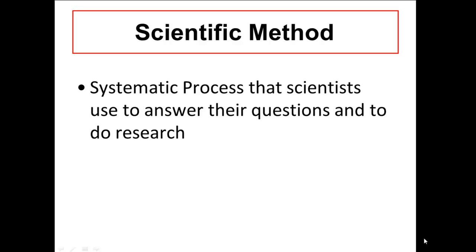If I were to define the scientific method, I'd start by saying it's a systematic process — systematic meaning we have one step that follows another step that follows another step. It's a systematic process that scientists use to answer their questions and to do research. Everything we know in science has either been learned by someone asking a question or by someone stumbling upon something by accident.